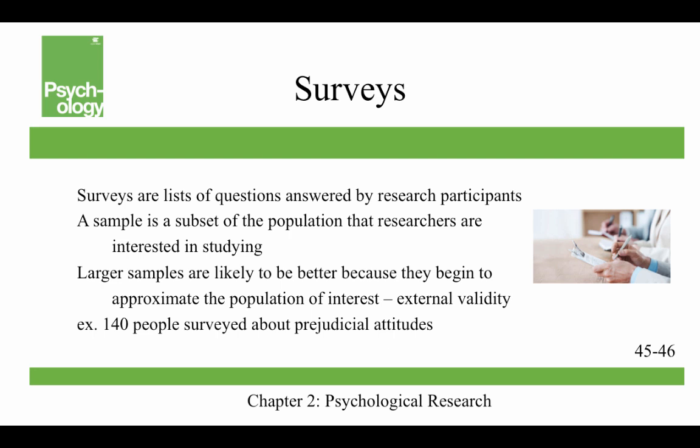Surveys are lists of questions answered by research participants. A sample is a subset of the population that researchers are interested in studying. Larger samples are likely to be better because they begin to approximate the population of interest — again an external validity issue. The more people you have, the more likely they are to match the characteristics of the population you want to study. For example, you might ask 140 people about their prejudicial attitudes; a study done a decade after 9/11 found lingering prejudices about some groups of people.